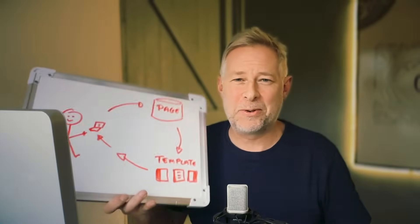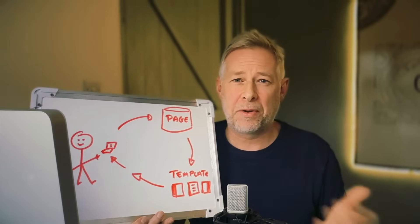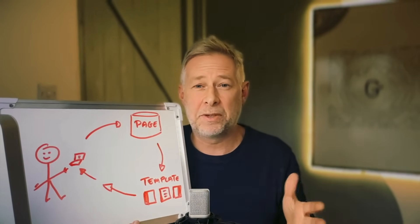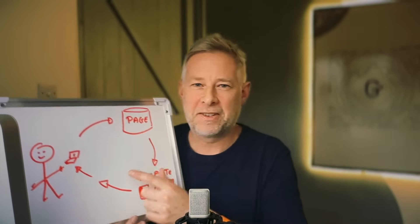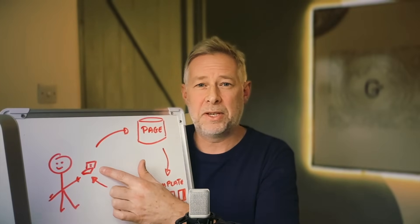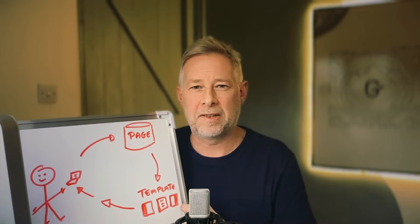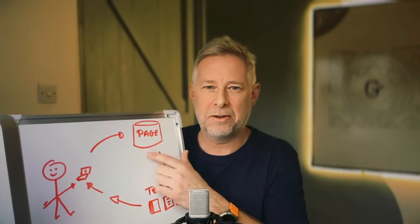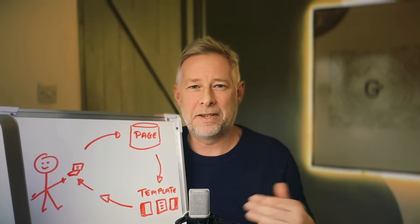The first principle is incredibly important to understand because it explains how WordPress works. This is useful to know whether you use a block theme, a classic theme, or even a page builder. When somebody visits a page on a WordPress website, a process happens magically behind the scenes to display the page with its full design and layout, not just plain text. Here's a simple explanation with my trusty whiteboard. When somebody clicks a link or types a URL, they're asking WordPress to show them a specific page. WordPress checks what the visitor wants to see, like a blog post or a home page, then goes to its database to fetch the required content. WordPress then selects a template for that content. Templates are preset designs for different types of pages.